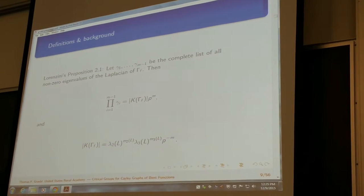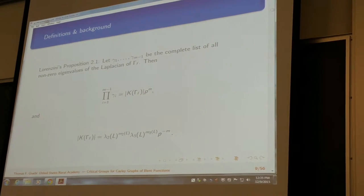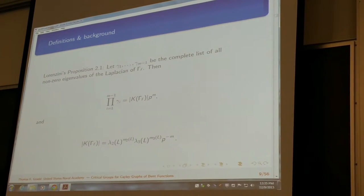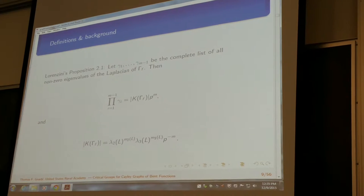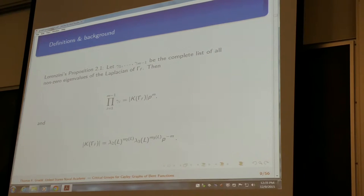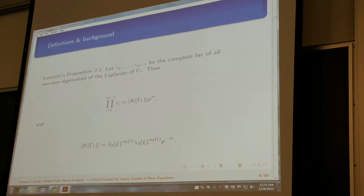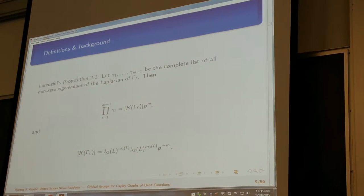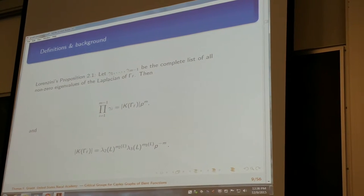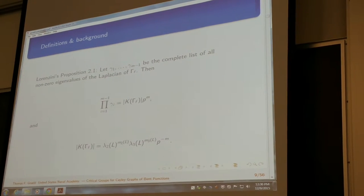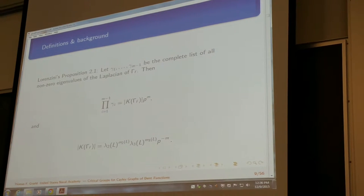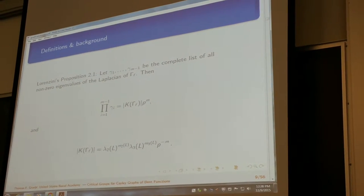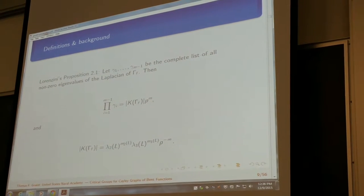I started my research by going through a paper by Dino Lorenzini where he studies critical groups in the Boolean case. One of his propositions was something I focused on where essentially what he did was he took the eigenvalues, the non-zero eigenvalues of the Laplacian and noted that when they're the product of all the non-zero eigenvalues is equal to the size of the critical group of the graph times p to the m. So for our case, I kind of rewrote it to look a little better and it's also my equation 1 up here on the board because I'll be referring to it later. The size of the critical group is equal to the second eigenvalue of the Laplacian to the multiplicity of that eigenvalue times the third eigenvalue to the multiplicity of that eigenvalue times p to the negative m. We omit the first eigenvalue because for all of these examples, the first eigenvalue is just equal to 1.